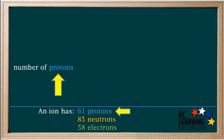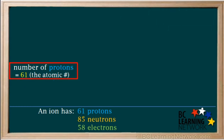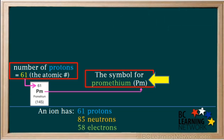We start by looking at the number of protons, which is 61. The number of protons is the atomic number of the element. So we look up element number 61 on the periodic table, and its name is Promethium, and its symbol is Pm. So we write Pm here.